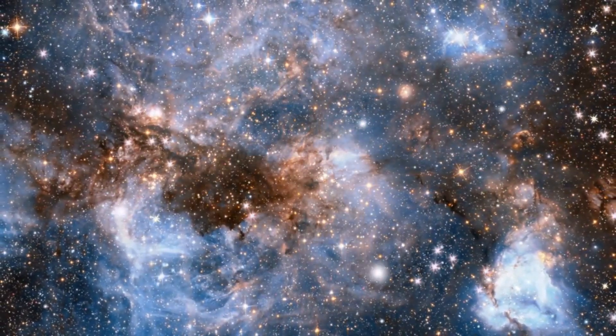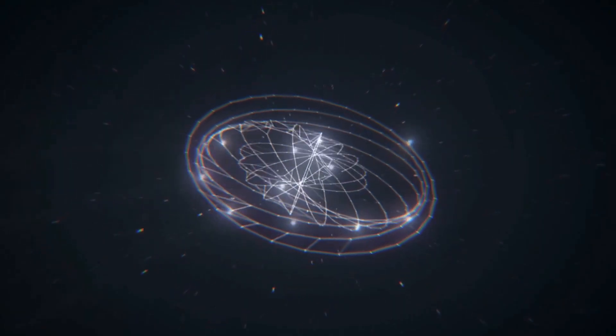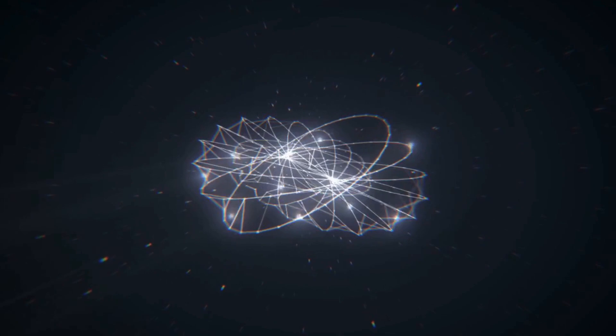The universe creates, destroys, and balances, maintaining equilibrium throughout its vastness. Approximately 275 million stars die every day, and with them, planets, civilizations, and light also perish.